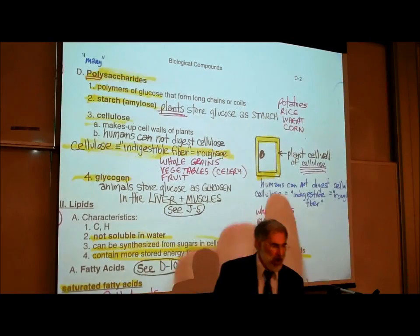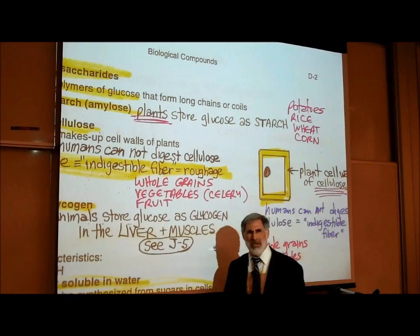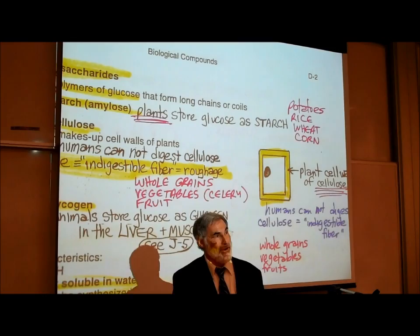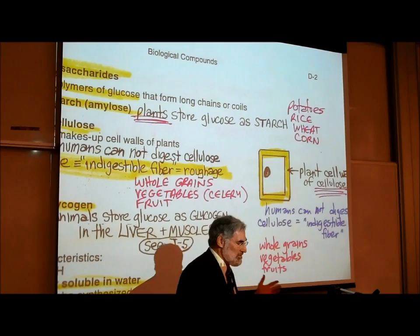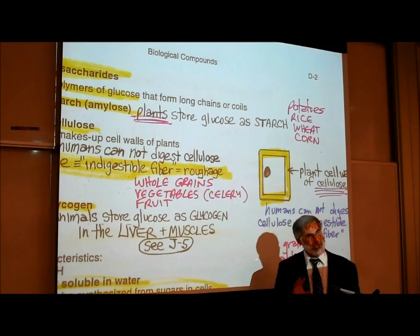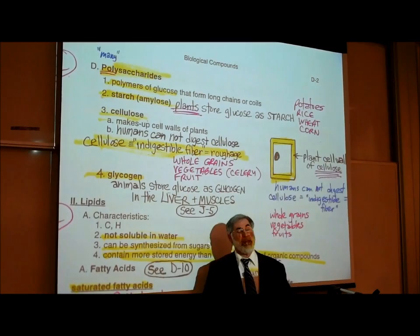Foods that are high in starch include potatoes, rice, wheat — we use wheat flour to make bread and pasta, which have starch — and corn. All of these are foods high in starch. Notice that the only foods containing starch or amylose are plants. There is no starch in animals, no starch in you. This is only found in plants — it's simply the way many plants store sugars by joining them together in a polysaccharide called starch.